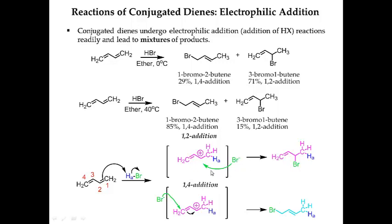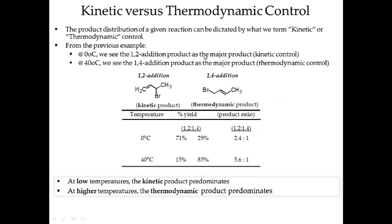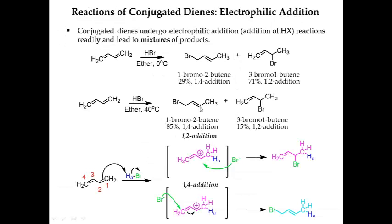At 0 degrees, the 1,2 product is the fastest product to form, even though it's not as stable as the 1,4 product, which gives you a di-substituted alkene. At 40 degrees, the 1,4 product is the more stable product, even though it takes longer to form. We call one the kinetic product and one the thermodynamic product. At lower temperatures, the kinetic product predominates — the product you get to fastest predominates, even if it's less stable. At higher temperatures, the more stable product predominates.